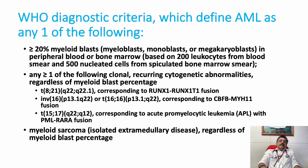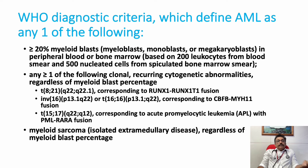WHO diagnostic criteria for AML: any one of the following should be present — more than 20% myeloid blasts in peripheral blood or bone marrow is sufficient. Additional cytogenetic features may also meet criteria, including myeloid sarcoma. The most common diagnostic criterion is peripheral smear or bone marrow study showing more than 20% myeloid blasts, and this should be confirmed with cytogenetic study.